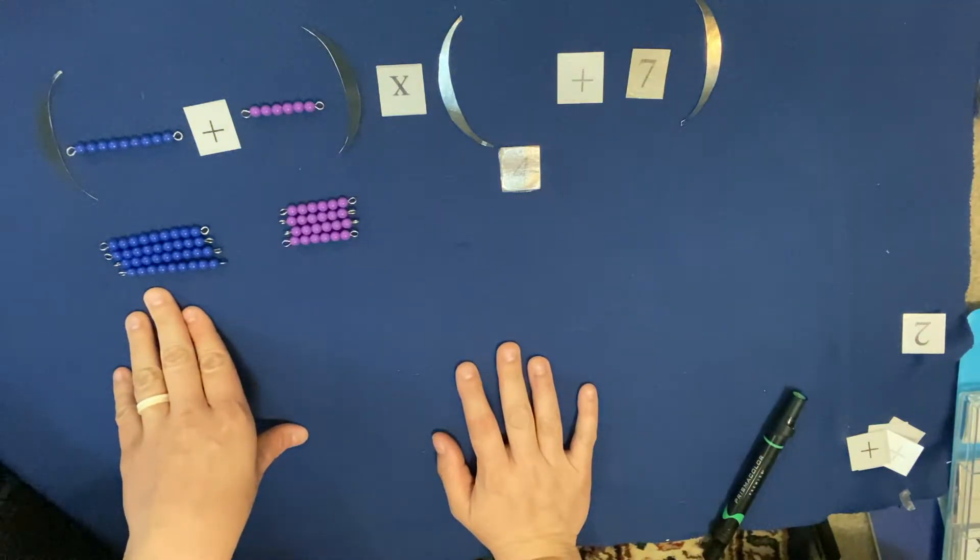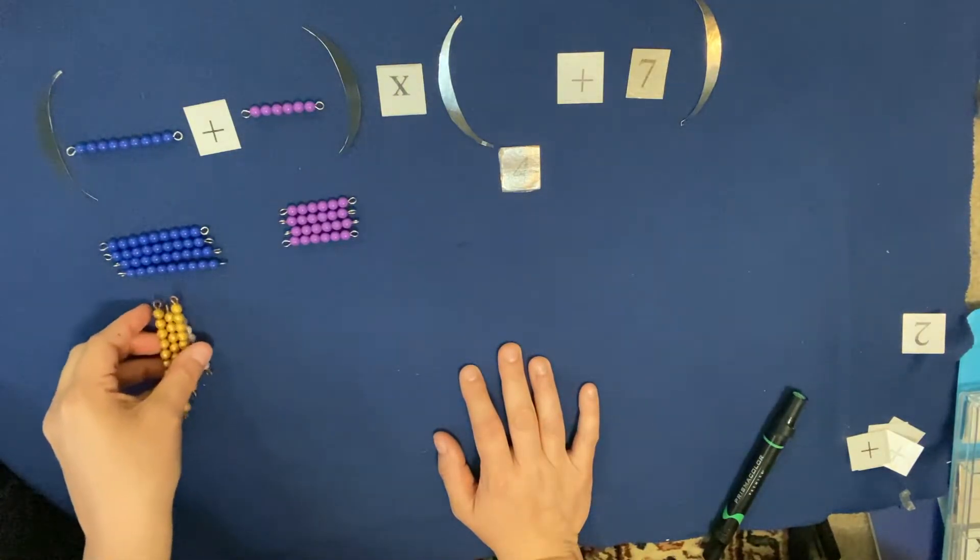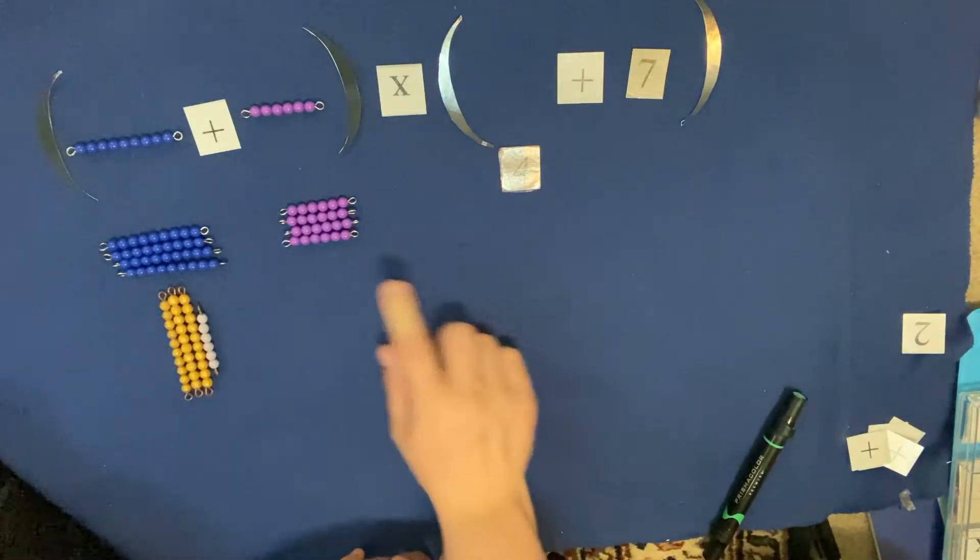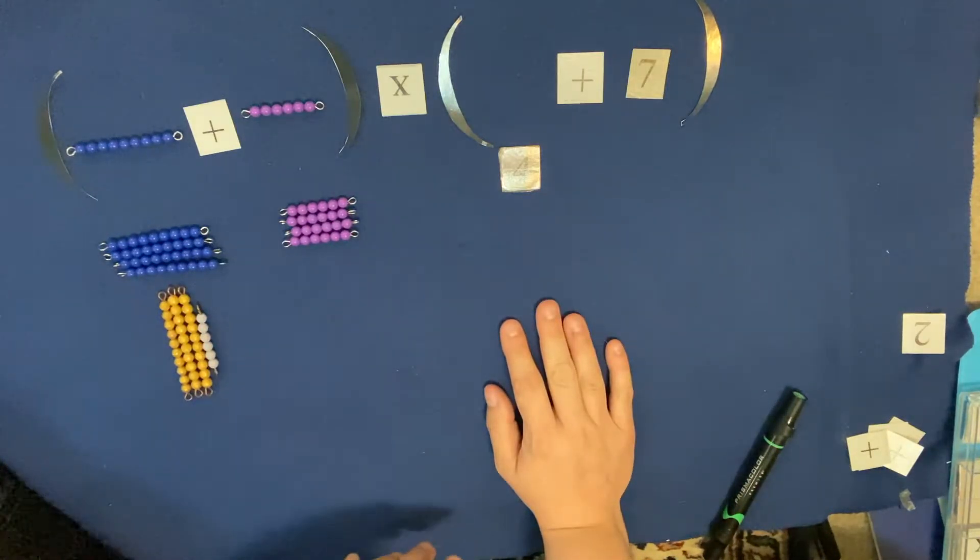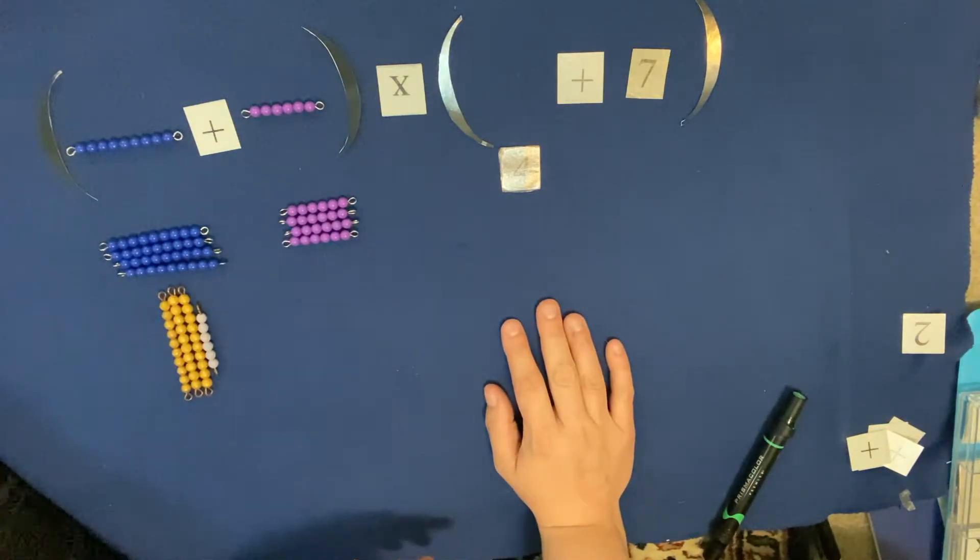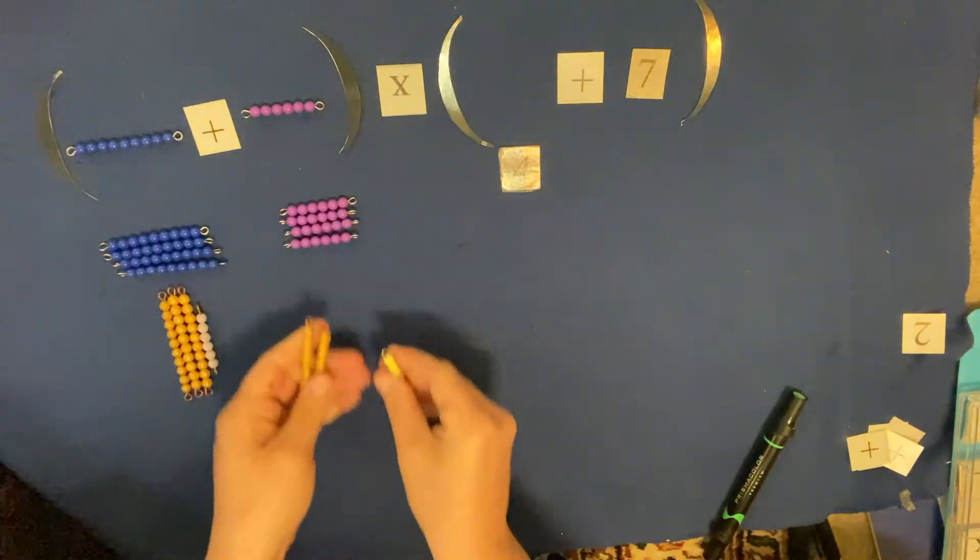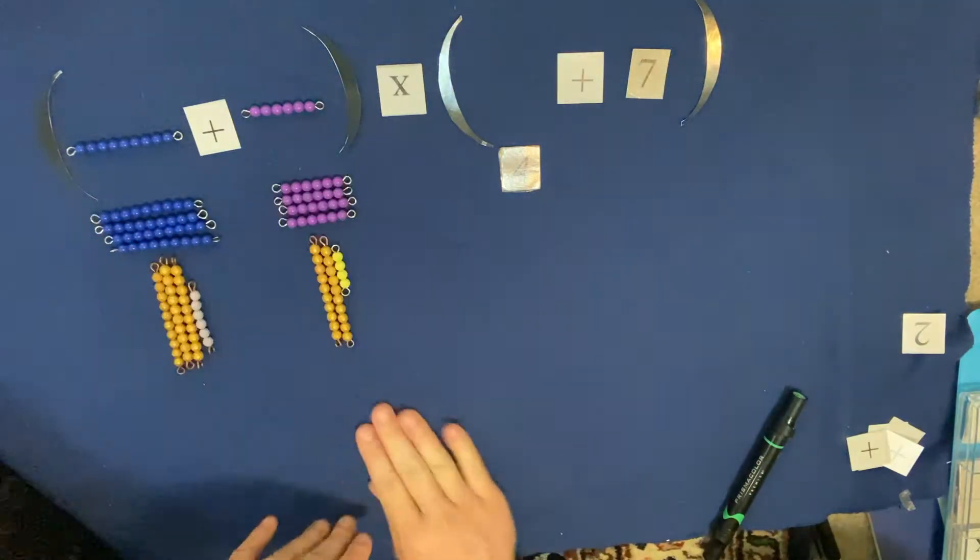What is nine times four? Anybody know that multiplication fact? It's thirty-six. And six times four—sorry, I know the six looks different, I have two different packs of beads mixed in my one box here—what is six times four? That equals twenty-four.